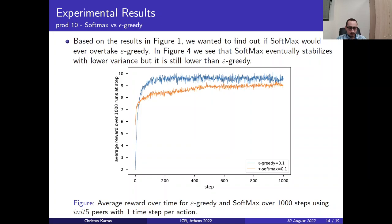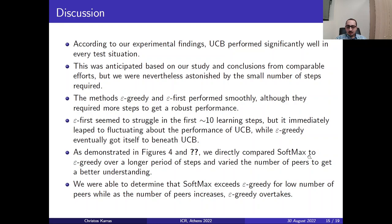Here we have another experiment. Based on the results of the first figure and on the first dynamic creation of peers we saw, we wanted to find out if the softmax algorithm would ever overtake the epsilon greedy. So here we see that softmax stabilizes with lower variance compared to the previous results, but still has lower performance than the epsilon greedy which is with blue. So this assumption was proven to be false. Epsilon greedy performed better across all scenarios. Here we have 1000 steps rather than 100 steps as the previous results. We wanted to look if the increase on the steps would ever lead for the softmax to overtake the epsilon greedy.